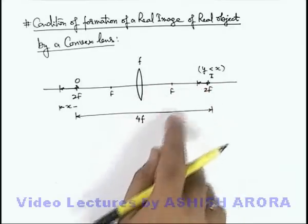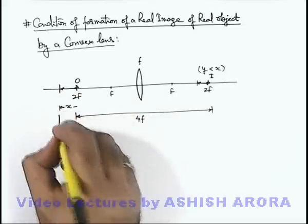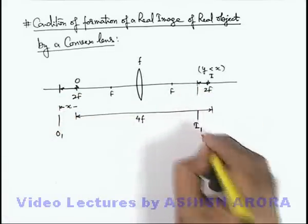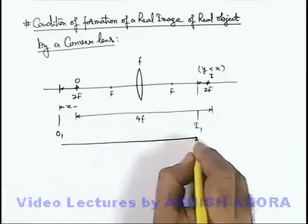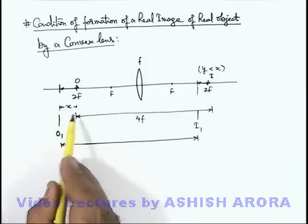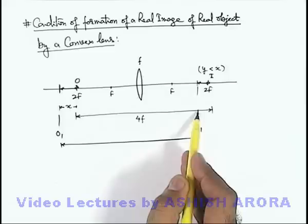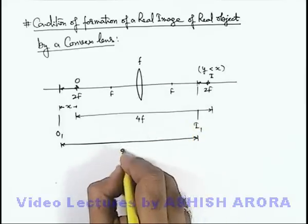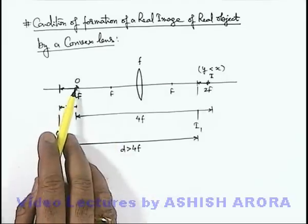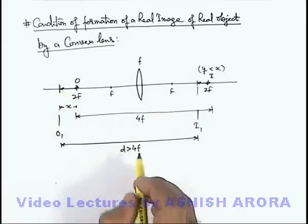The displacement from the 2f point to infinity on the object side is mapped from the 2f point to f on the image side. For the new position of object O1 and new position of image I1, the object is displaced by x and image is displaced by y, which is less than x, so the separation d will be more than 4f.